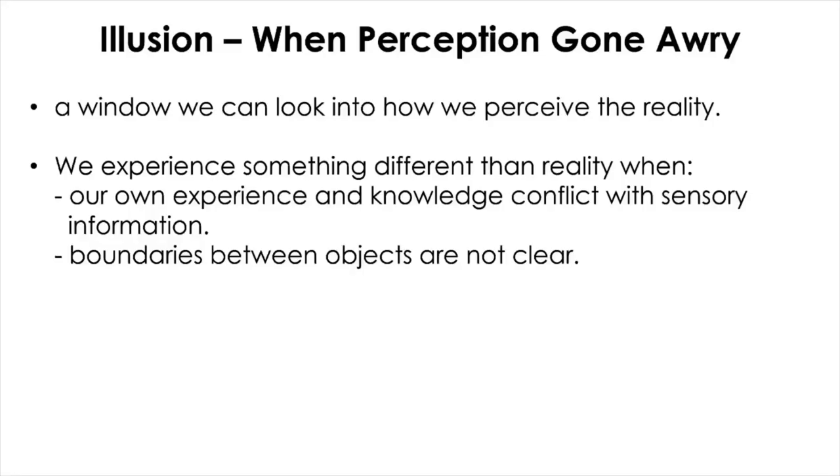We also experience illusion when boundaries between the objects are not very clear. When there exist multiple ambiguous sensory signals competing with each other for perceptual processing, our brain likes to choose only one interpretation at a time. Now, take a look at the face inside the mask and see if you see something special in the face. Now, have another look. Do you see a face or faces? Do you see a man and a woman kissing each other?